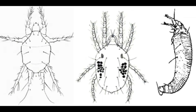In this video, I will be quickly going over three agriculturally important families of mites: the Tarsanemid mites, the Tetranychid mites, and the Eriophyid mites.